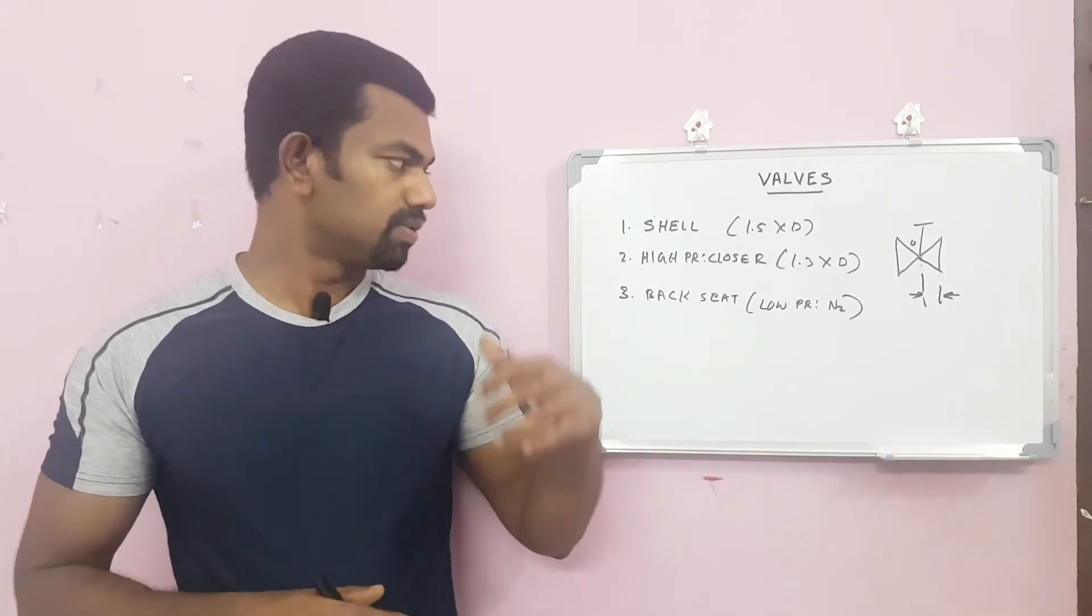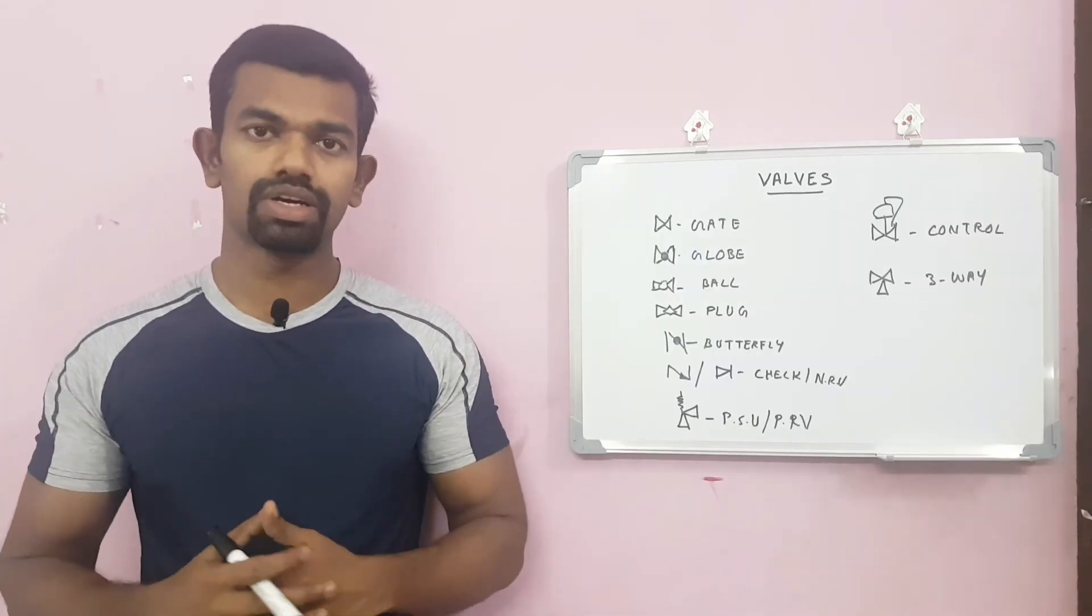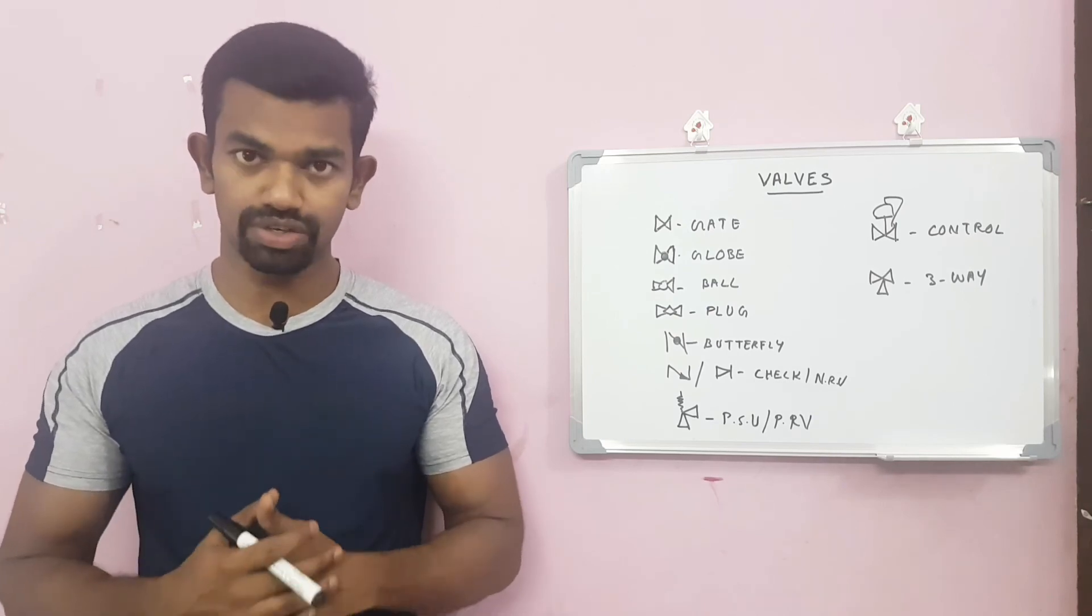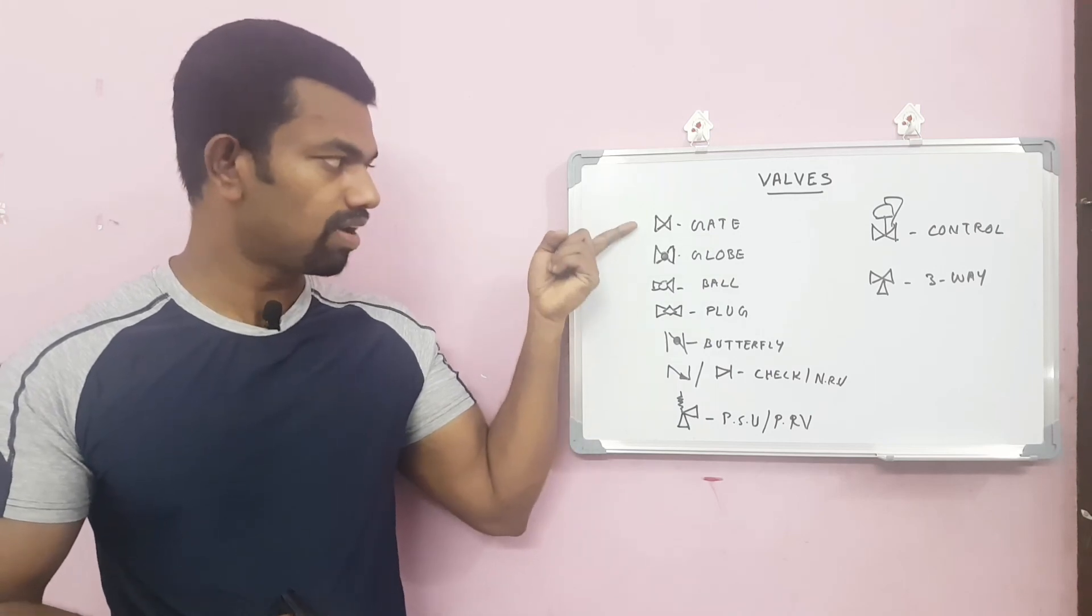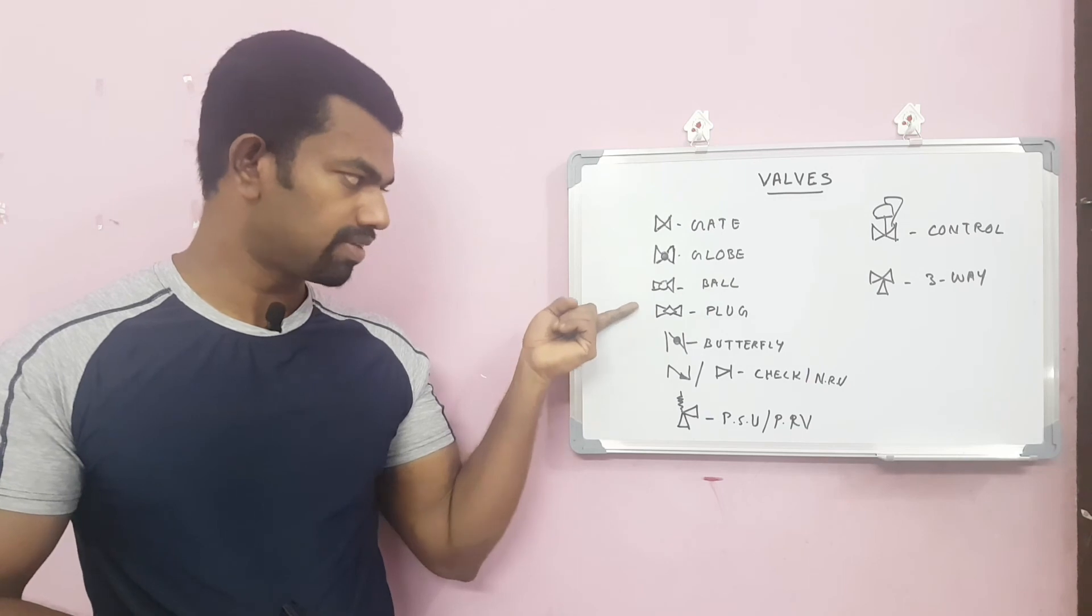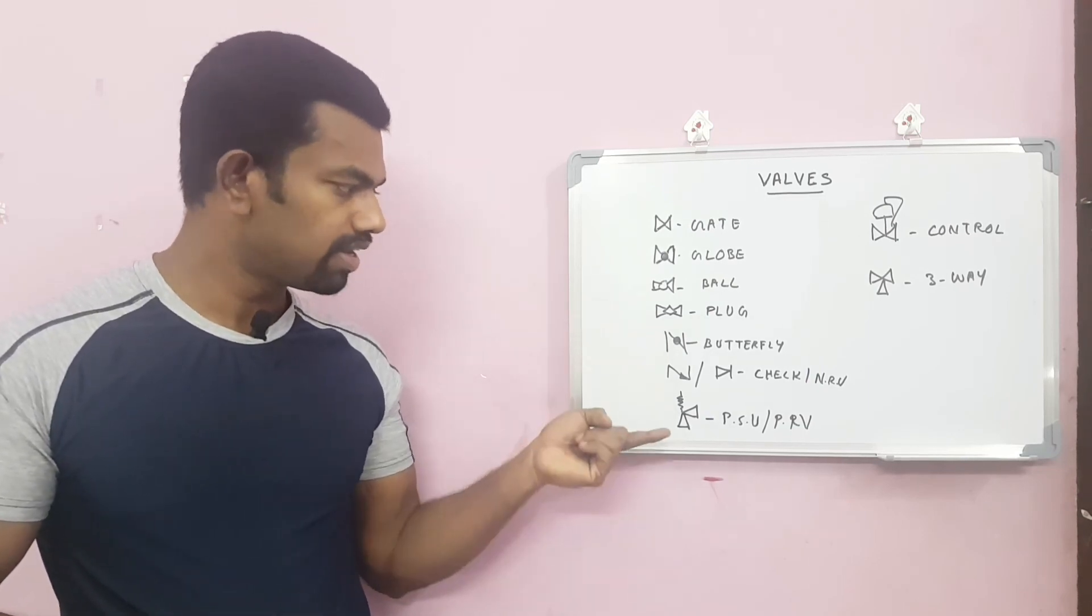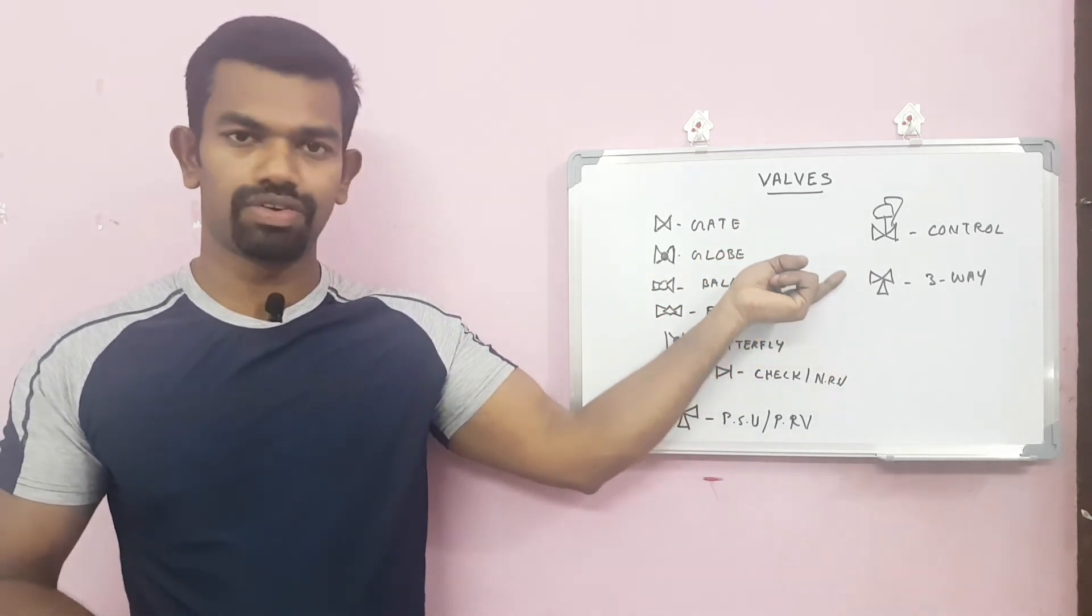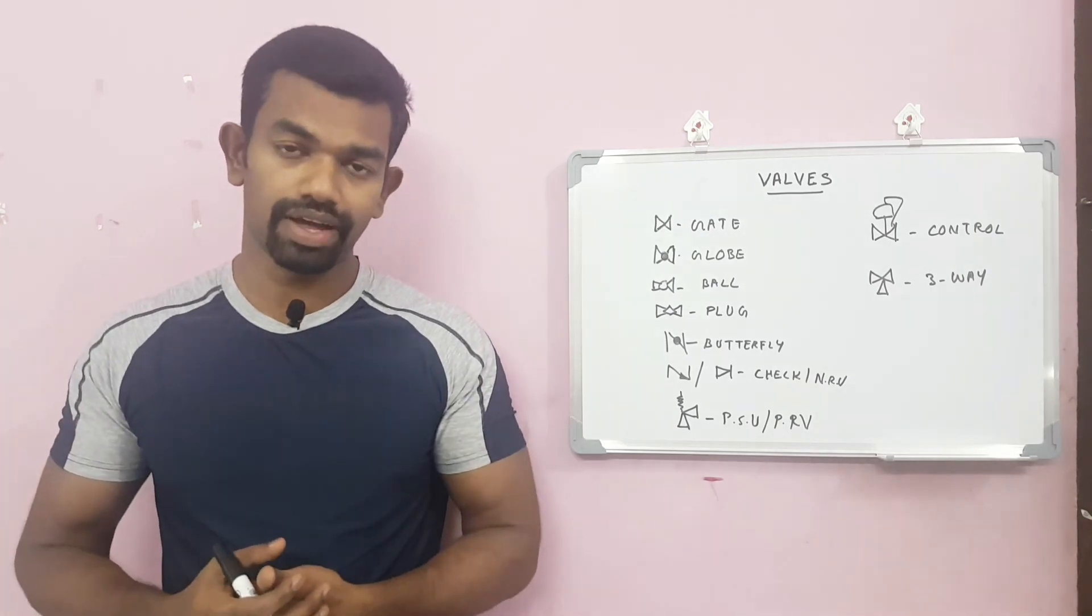Now we can take a look at the valve symbols used in P&ID and isometric drawings. Symbolically these valves are identified: this is gate valve, this is globe valve, this is ball valve, this is plate valve, this is butterfly, this is NRV or check valve, this is PSV or PRV, this is a control valve, and this is a three-way valve. There are more than 100 types of different valves and we are not able to explain all the valves here.